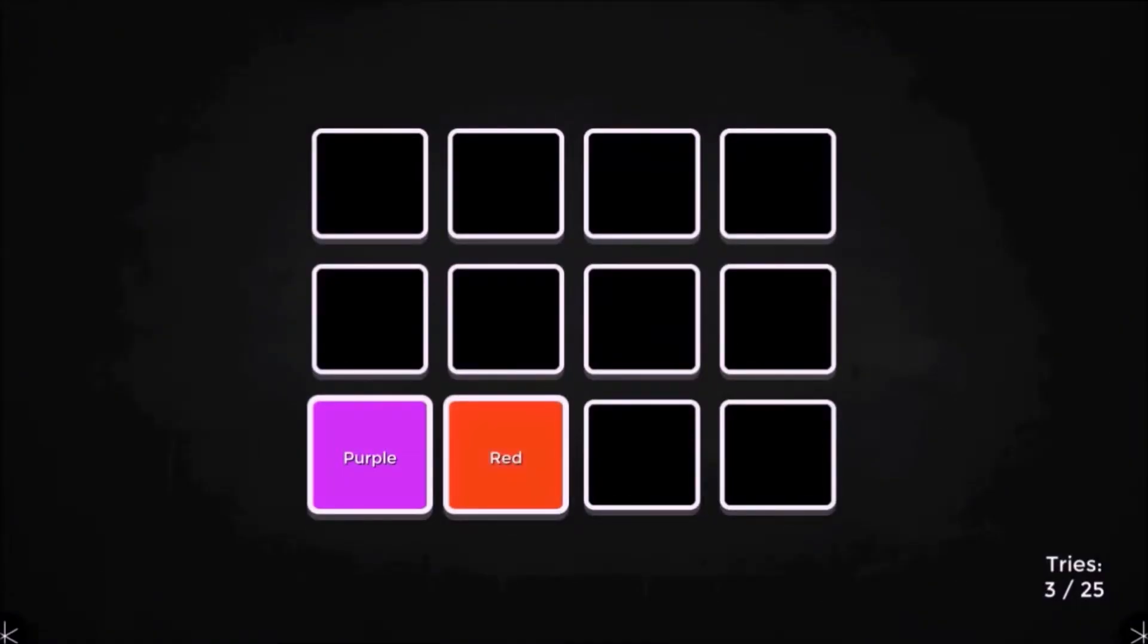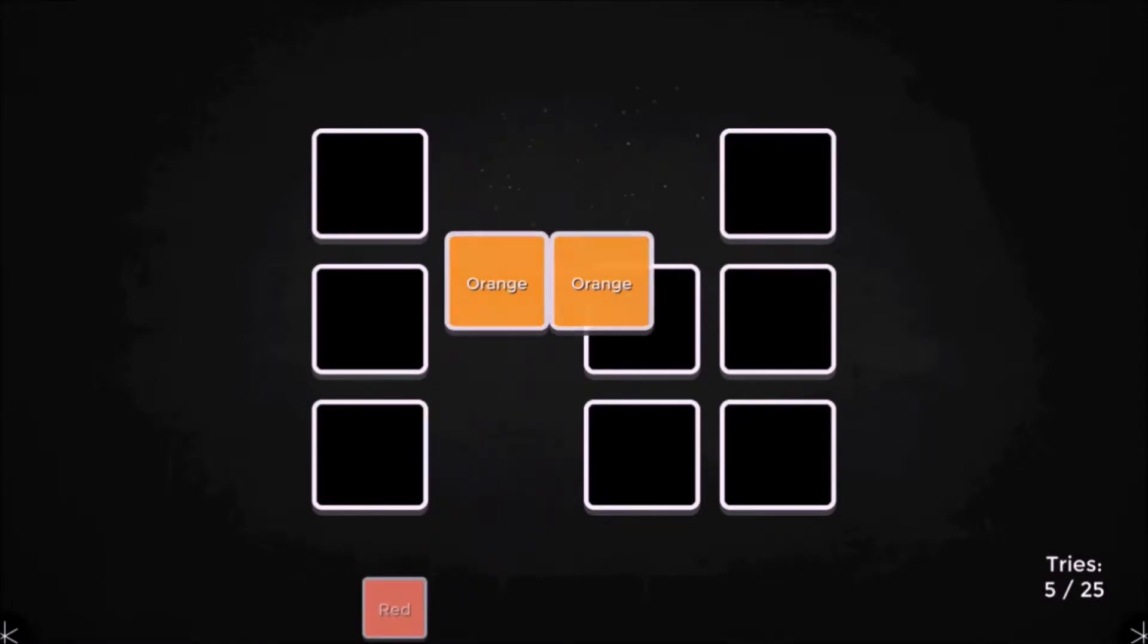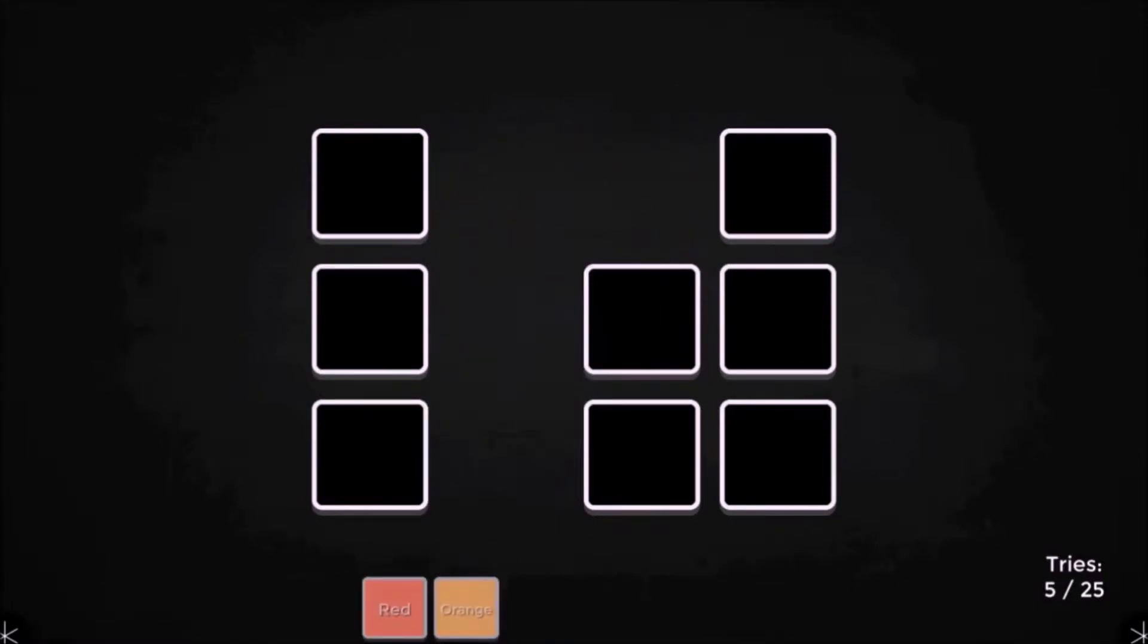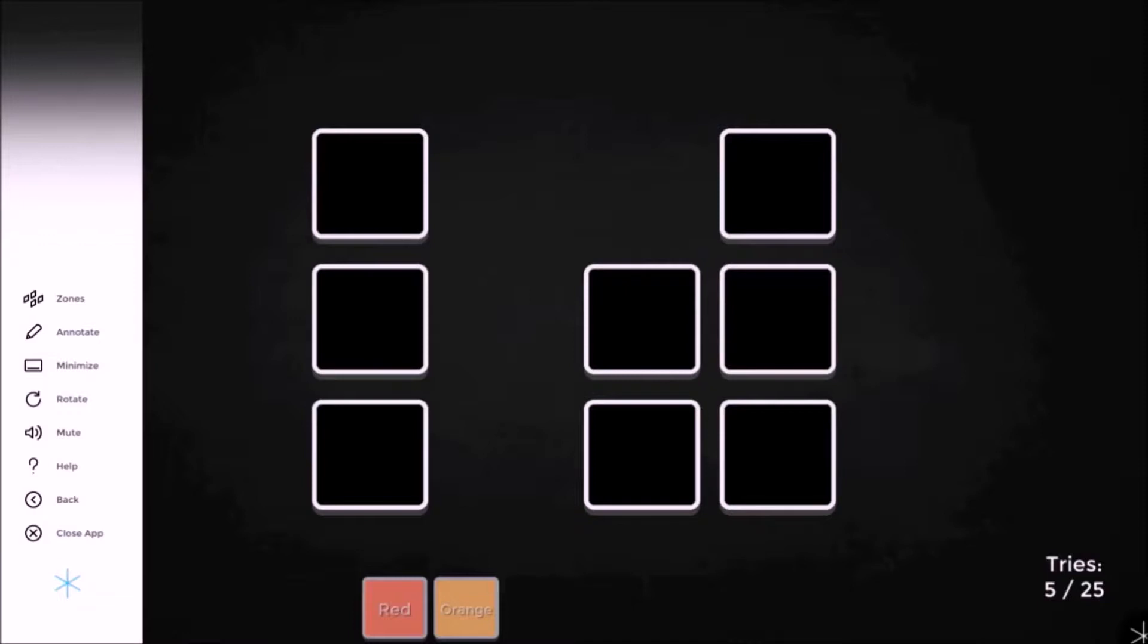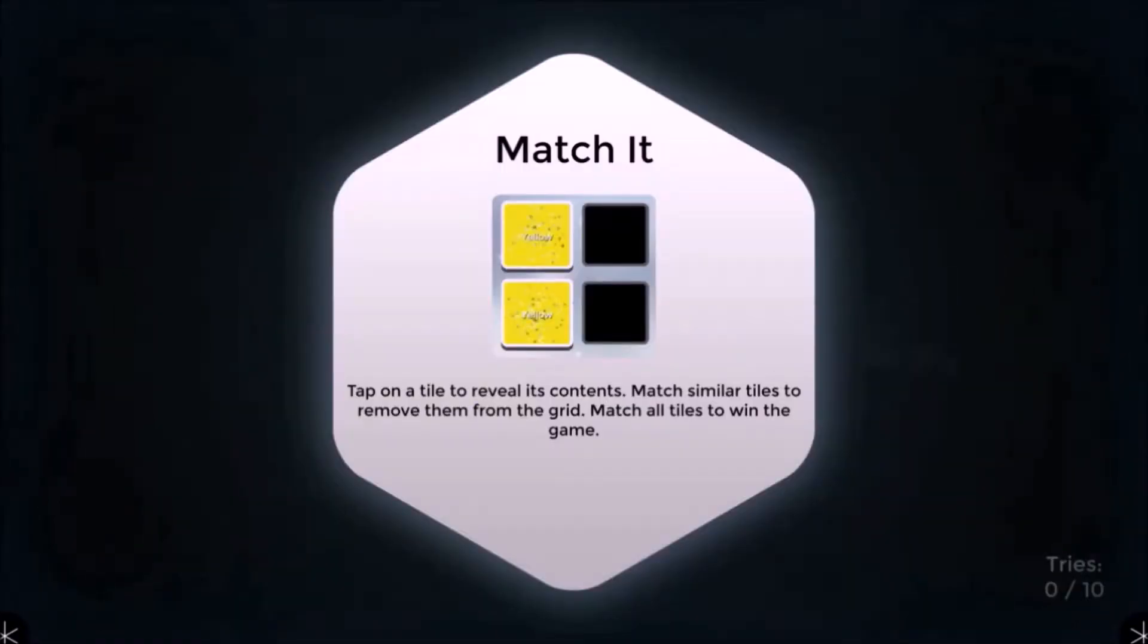Tap on two tiles to reveal content and see if it matches. Match similar tiles to remove them from the grid. Match all of the tiles within a given number of tries to win the game. You can go back to the previous screen by using the Back button on the corner menu. Here, we'll select an easier version of the Colors game, with 10 tries instead of 25.